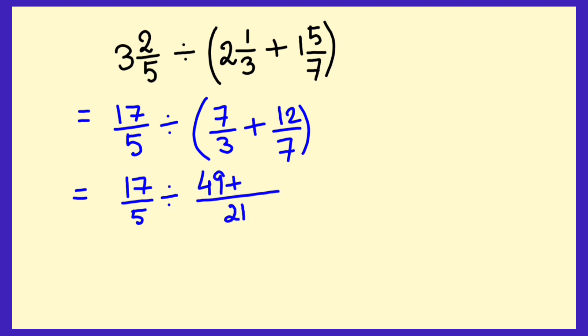3 into 7 is 21 and that 7 will be multiplied to that 7, 49 and 12 by 3 that is 36.